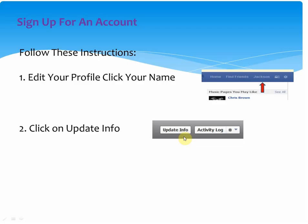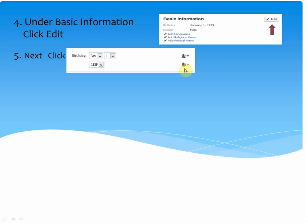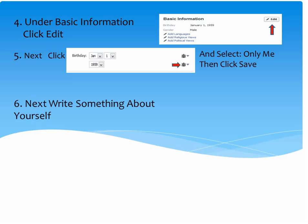That will bring up a screen where you can click to update your info. So you click on Update Info. Once you've clicked on Update Info, the next thing you're going to do is look and go under Basic Information. You'll see it and you're going to click on Edit. After you click on Edit, the next thing you're going to do is look for where it says Birthday, and you'll see this icon here. You'll click on this icon, and under there, you're going to select Only Me, and then save it.